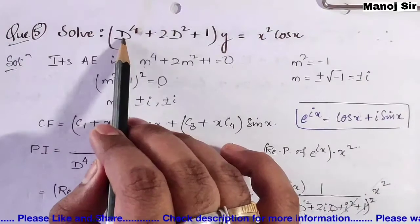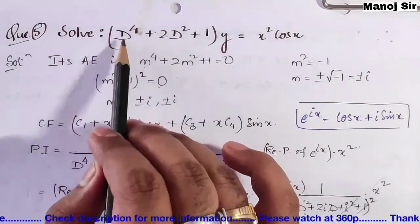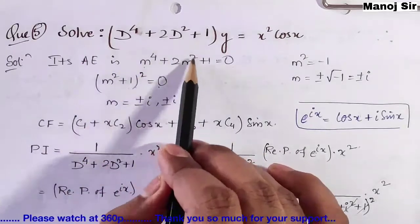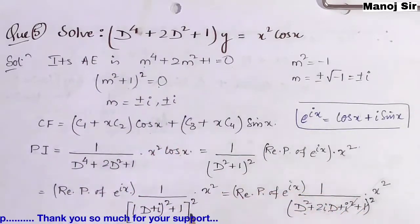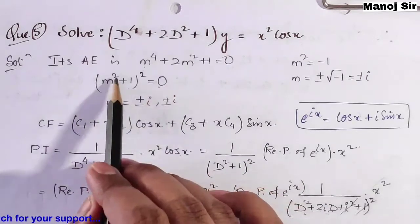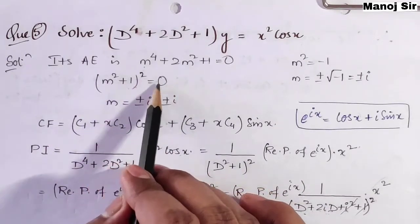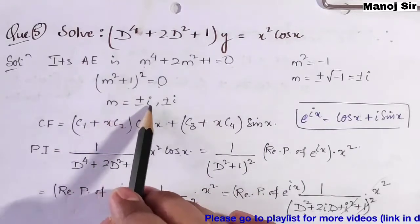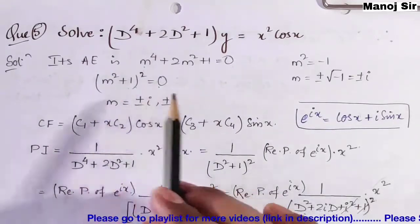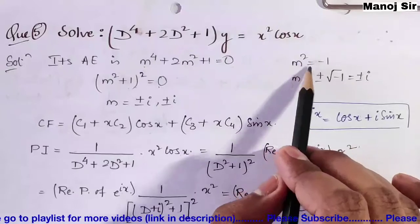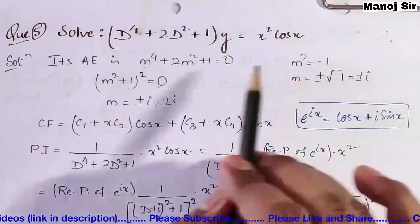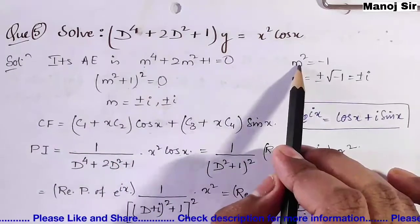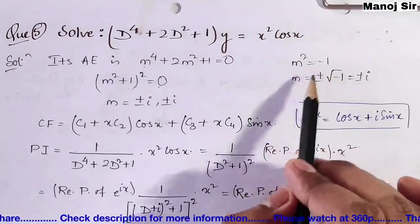In place of D we put m, so the auxiliary equation becomes m⁴ + 2m² + 1 = 0, which factors as (m² + 1)² = 0. On solving this, you will get m = ±i, ±i.